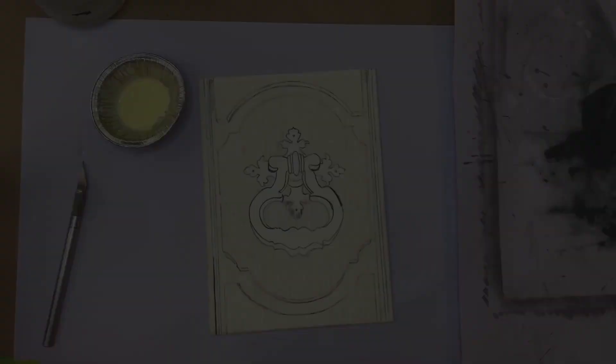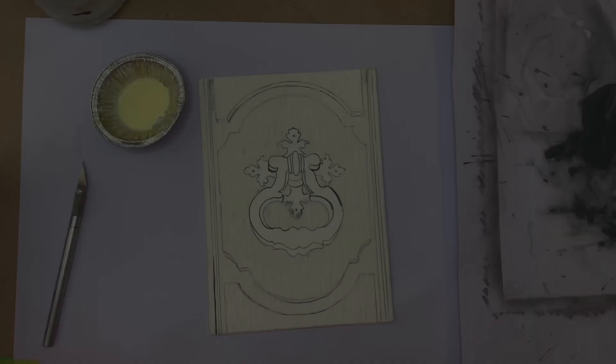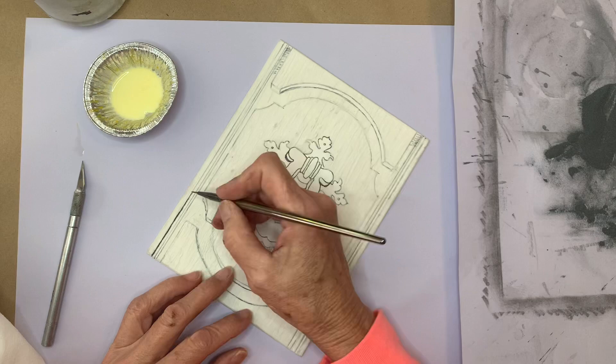Carborundum, the grit found coating sandpaper, is available in loose form. Here I'm using 320 grit and applying it to the plate with white carpenter glue. In this case the glue has been tinted yellow so it's easier to see.